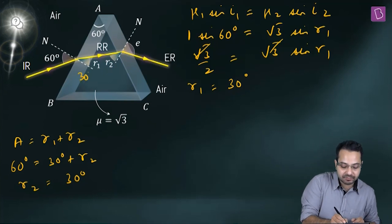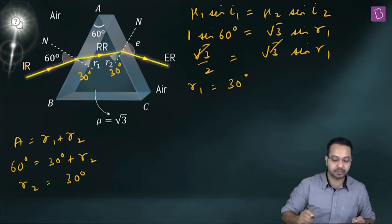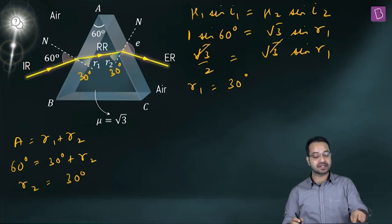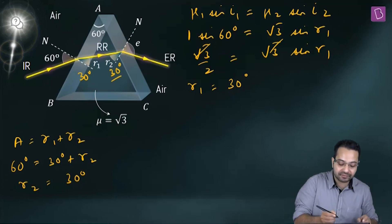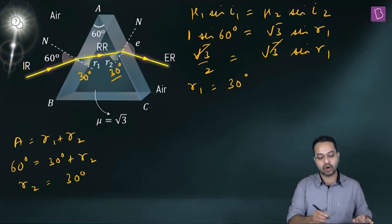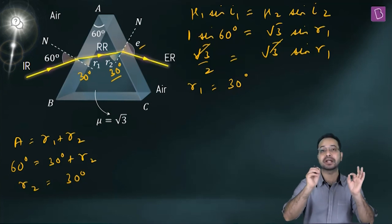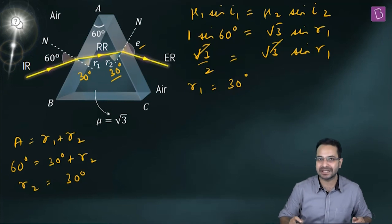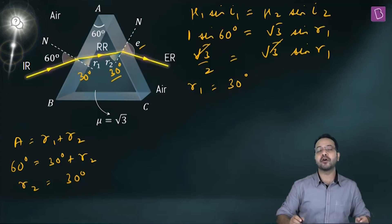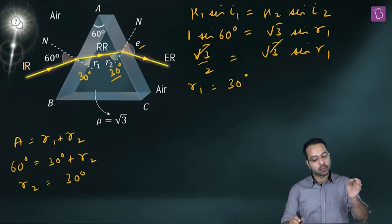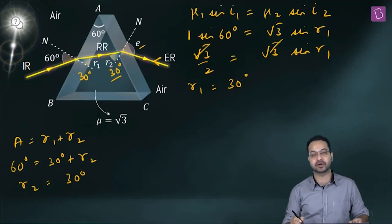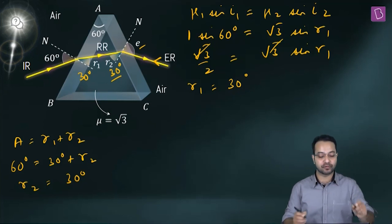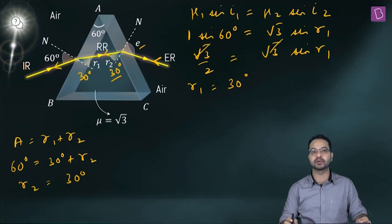When angle of incidence is 60°, angle of refraction is 30°. But now the angle of incidence inside is 30°. I'll use the principle of reversibility of the path of light, which states that if the direction of light is reversed, the light is going to follow the same path.